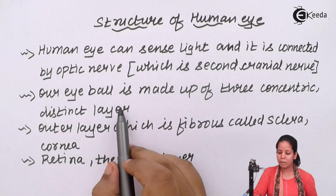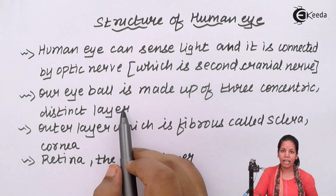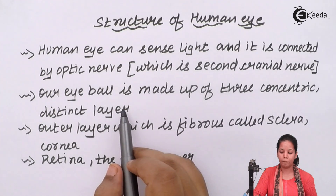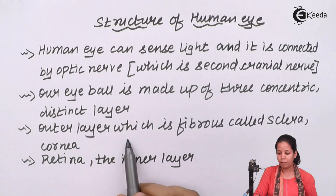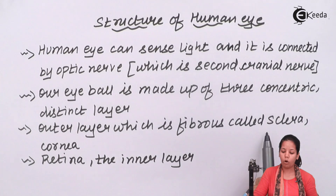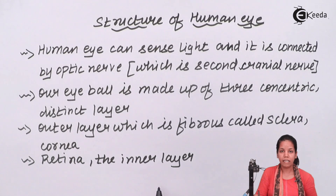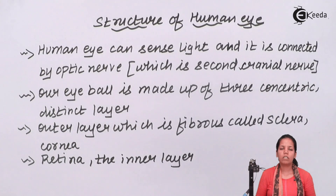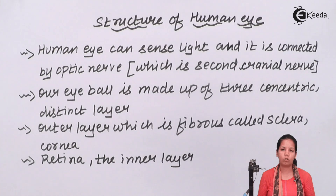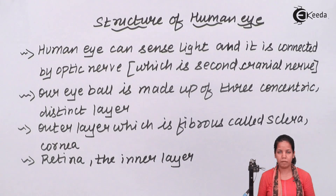Our eyeball is made up of three concentric layers, and these three concentric layers have different functions. The outer layer, which is fibrous, is also termed as sclera or cornea. Then comes the retina, the inner layer, and inside the retina one can see a lot of structures — the cells which are termed as rods and cones. These rods and cones are very crucial for the formation of an image.